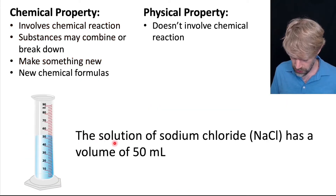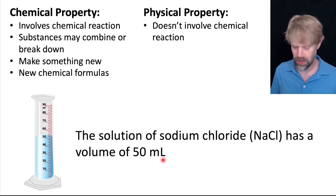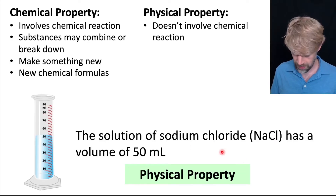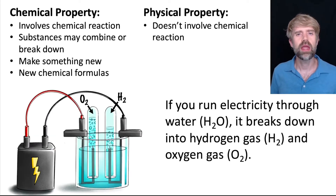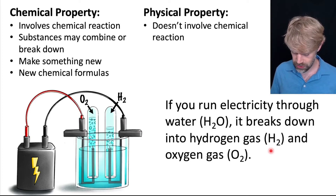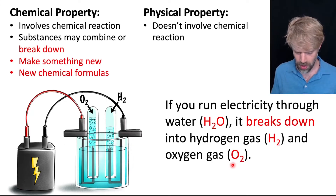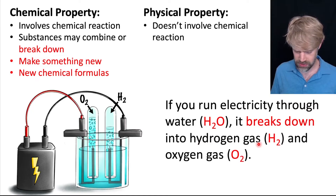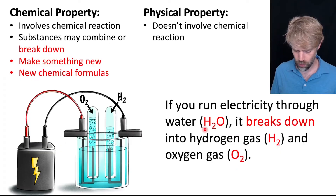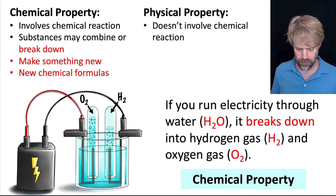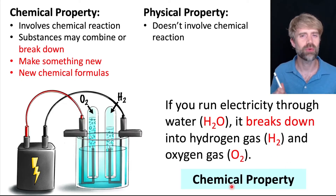This solution of sodium chloride has a volume of 50 milliliters. Any chemical reactions or chemical changes going on here? Nope. It's a physical property. Next one: if you run electricity through water, it breaks down into hydrogen gas and oxygen gas. There are a lot of clues here — water is breaking down and it's making new things: hydrogen gas and oxygen gas. Those have different chemical formulas from water. All of those clues mean that we're talking about a chemical property.